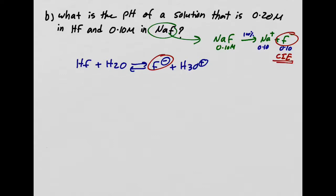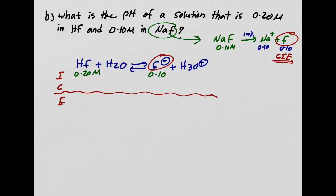We still write the ICE table for the weak acid equilibrium. However, the initial concentration of F⁻ is now 0.10 M, not zero. So the ICE table becomes: HF starts at 0.20, F⁻ starts at 0.10, and hydronium starts at 0. Changes are −x, +x, +x, giving equilibrium concentrations of (0.20 − x), (0.10 + x), and x.